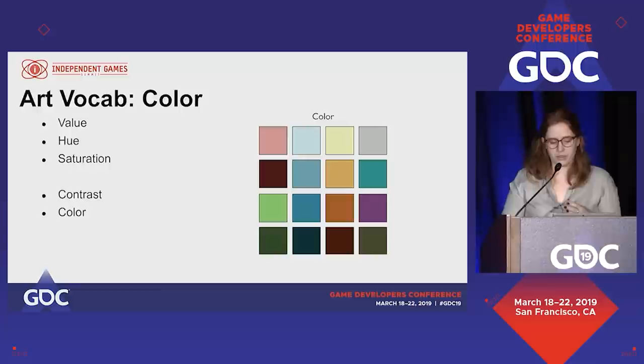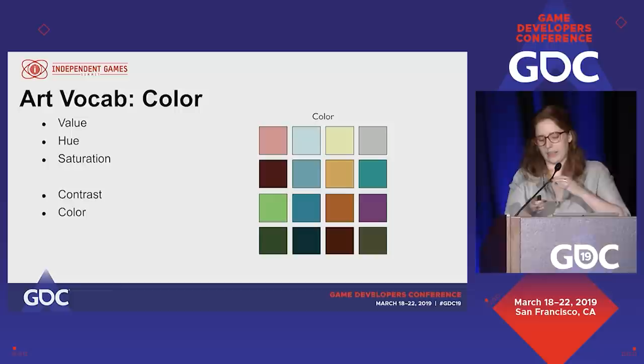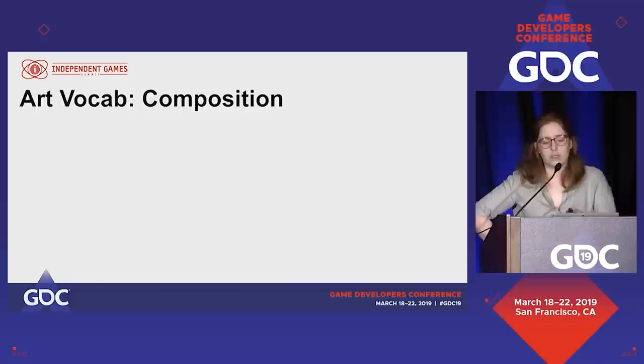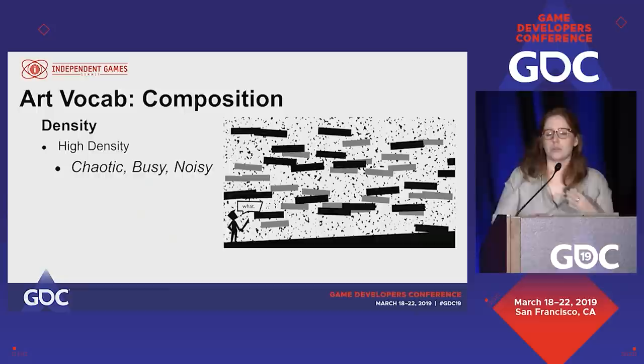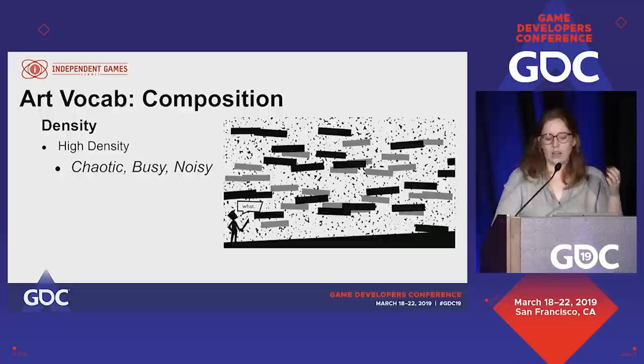When we talk about color, it's important to try and talk about all of these elements individually. It's more valuable to say I want a light, bright sky than it is to say I want a blue sky on its own. So composition — there are a whole lot of elements to composition in art, but one that applies to gameplay the most is density. High density visuals are chaotic, busy, and noisy — basically how much stuff is on the screen. They can make your visuals feel more closed in, make you feel frantic, but they can also make your player space seem more alive, vivid, and full.